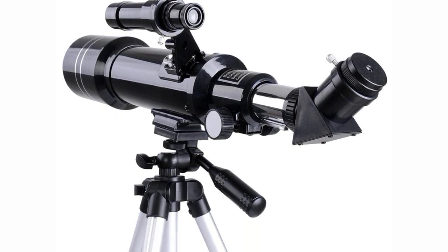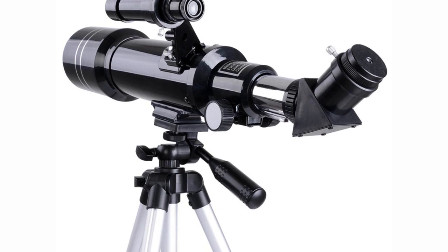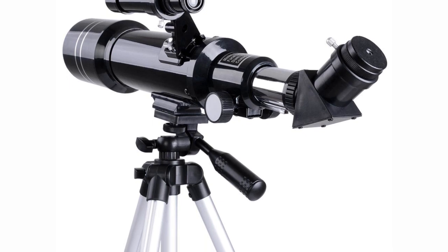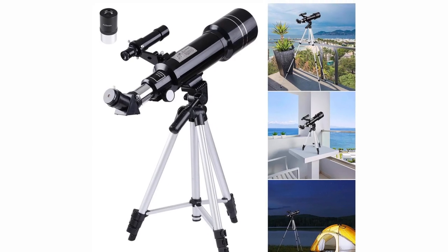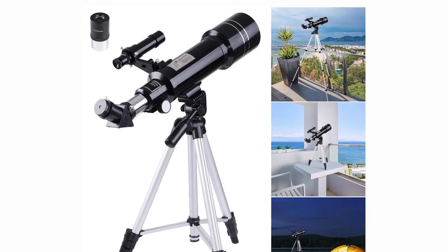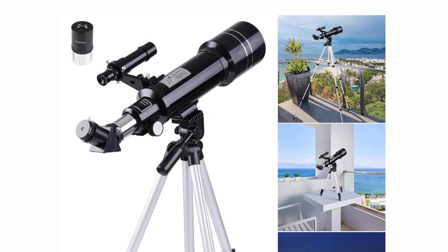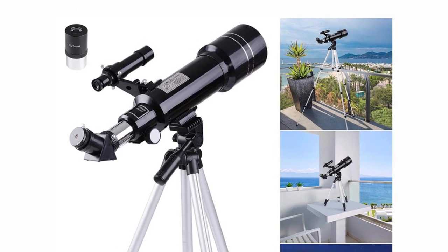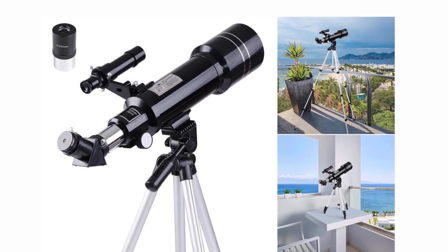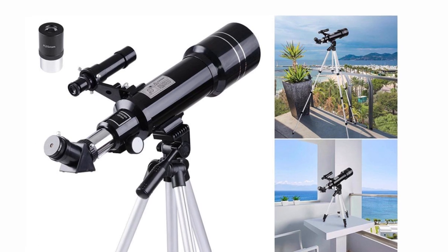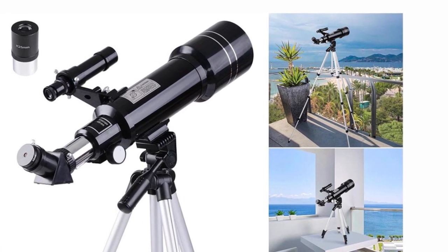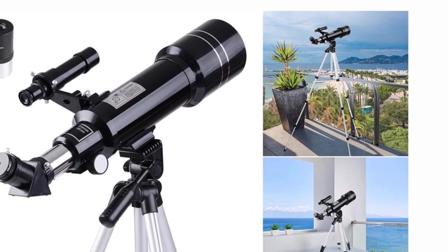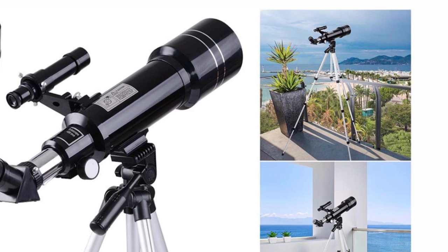The AW 70mm telescope is a complete package, and it comes with a manual, tripod, aiming platform, eyepiece, finder scope, and optics tube. The price is very affordable, and it gives amateur astronomers the ability to test the hobby and see if it's something they're interested in pursuing.